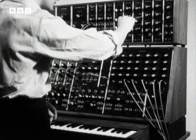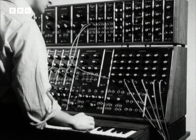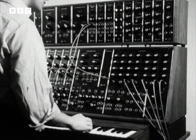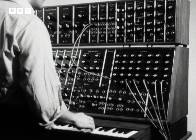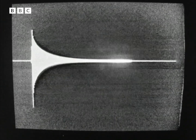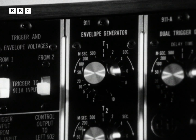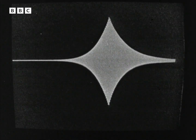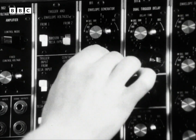The continuous sound has to be shaped so that it has a musical form when it's played. A unit called the envelope generator does this by controlling the way a sound starts and finishes. Some musical sounds are made up of fundamentally the same kinds of vibrations, but it is the shaping of the note when it's played which makes the difference between the sound of a piano and a flute.